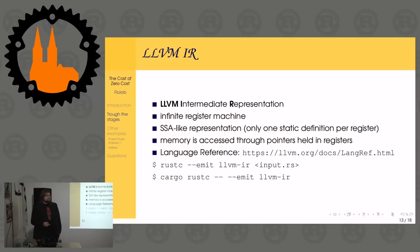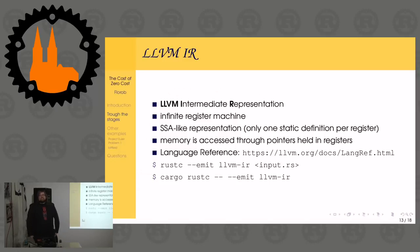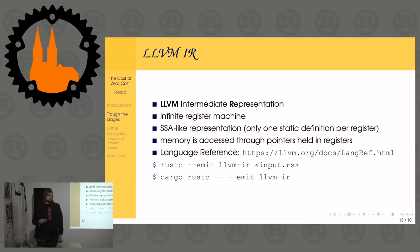LLVM intermediate representation is a so-called infinite register machine. A valid way to look at it: you're assigned an infinite number of variables and then use those variables.